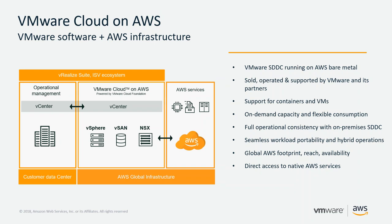Any monitoring or control tools you're using today can be leveraged with VMware Cloud on AWS. With VMware Cloud on AWS, you get VMware software running on AWS infrastructure — the VMware SDDC runs on AWS bare metal, sold, operated, and supported by VMware and its partners. It supports containers and VMs, offers on-demand capacity, full operational consistency between your on-premises SDDC, seamless workload portability, the global AWS footprint, and direct access to native AWS services.